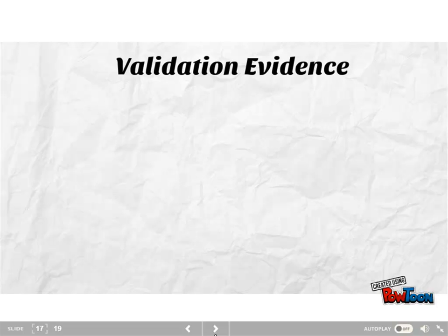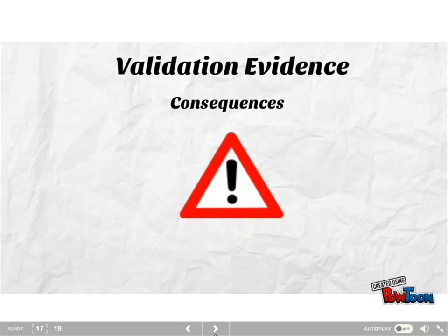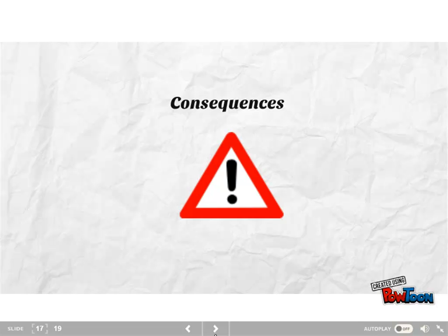We also need to look at consequences. This includes intended consequences — perhaps the positive effects of using a test — as well as unintended consequences. Unintended consequences are an issue if they result from construct underrepresentation or construct-irrelevant variance.